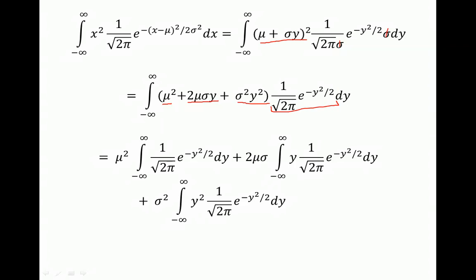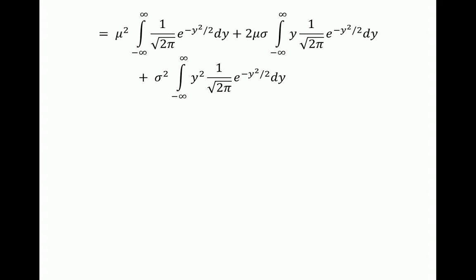Because this is a summation inside the brackets, we can split the expression into three integrals. In the first integral, mu squared is a constant and can be taken outside as a multiplier. In the second integral, 2 times mu times sigma is constant and can be taken outside, while y remains inside. In the third integral, sigma squared is constant and is taken outside as a multiplier, with y squared remaining inside.